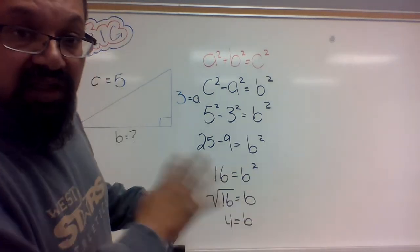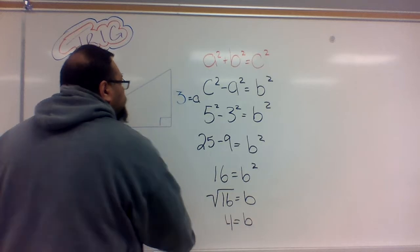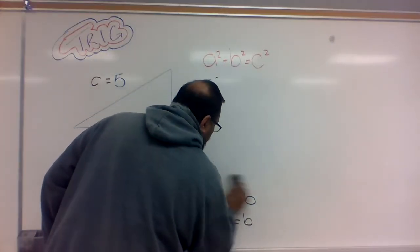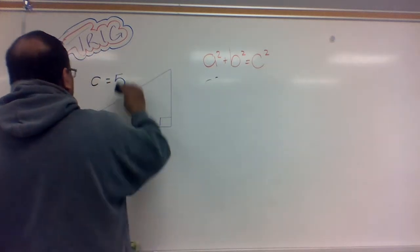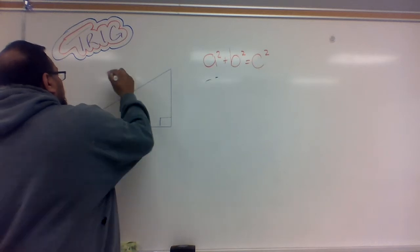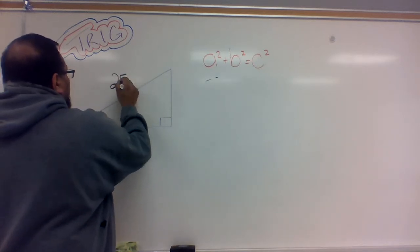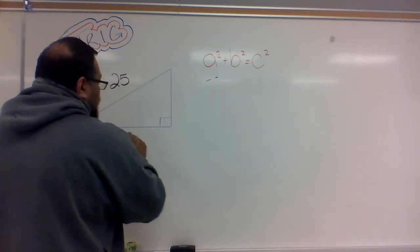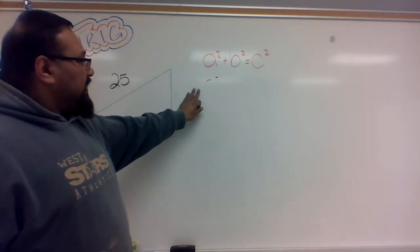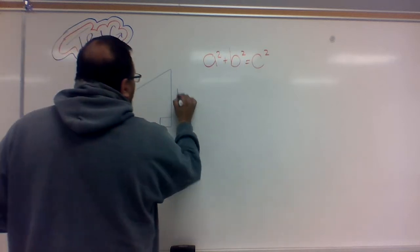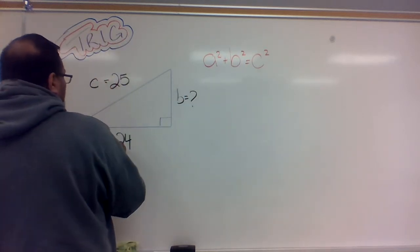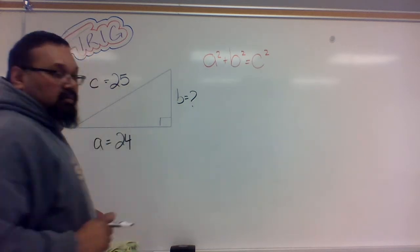What if I actually have 25 here, 24 there? Now I don't know this side. But like I said, when I use the formula, I still label that as my B. This one's still going to be my C, and this one's still going to be my A.